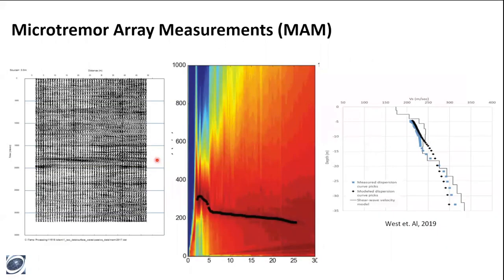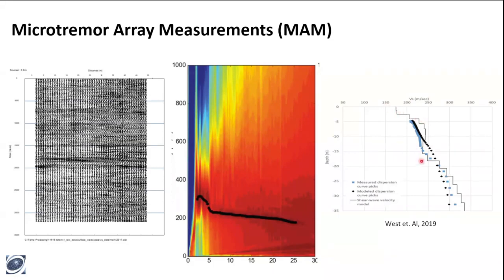Processing MAM data is pretty straightforward. You take your raw data and perform the spatial autocorrelation or SPAC transform. This produces a dispersion image similar to active MASW, although the fundamental mode is a lot less clear — that's somewhat site specific. After picking your dispersion curve or fundamental mode, you go through the same inversion process to create a velocity model, and from there calculate your VS30 and site class.